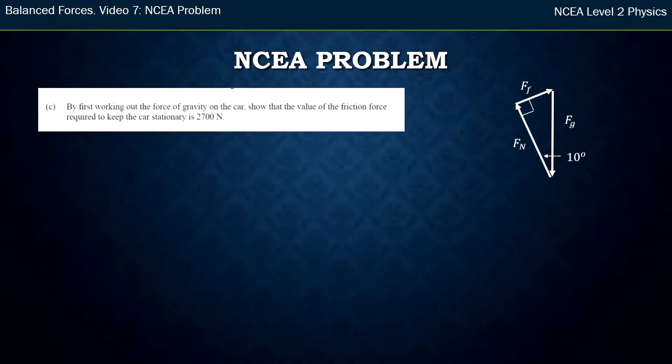All right, so C is another merit question. It says, find the force of gravity on the car, and then show that the friction force is 2700 newtons. So they've given you a clue on which way to start. So the only formula we have for forces really is force of gravity, which is mass times gravitational field strength. In this case 1600 times 9.8 newtons per kg. Multiply those together you get 15,000 newtons.